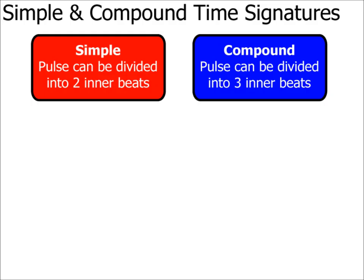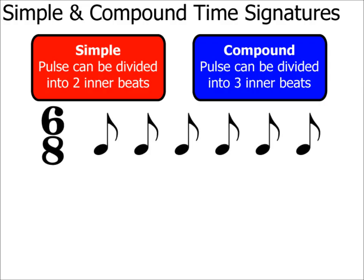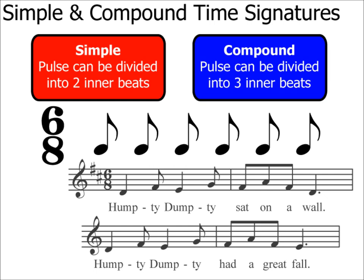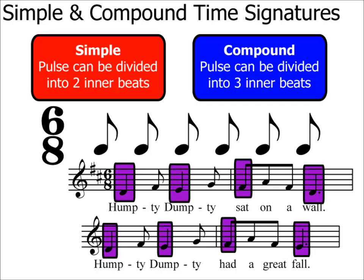You may have noticed that I've started to use the word pulse in place of beats. There's a reason for this. Identifying simple and compound time signatures is actually dependent on the pulse as opposed to the beat. Let's look at 6/8. You'll know that this time signature means six quaver beats in the bar. However, have a look at this tune — it's the opening bars to the nursery rhyme Humpty Dumpty. Pause this video and have a go at singing or humming this tune, but tapping your feet to the pulse at the same time.